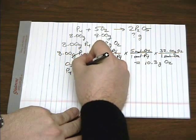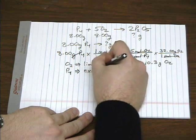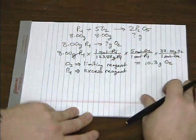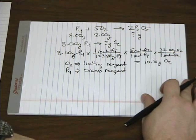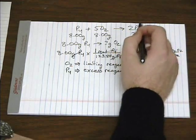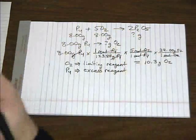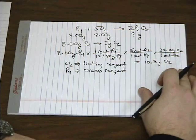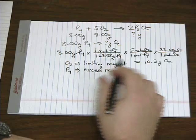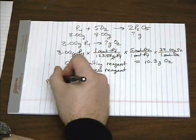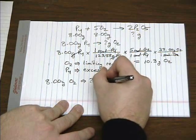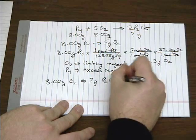So since not all 8 grams of phosphorus is going to react, we're going to have some amount left over, which we call the excess reagent. So now we can figure out how many grams of product are going to be formed in this reaction. And the thing to remember is you always use your limiting reagent. So we'll start with our 8 grams of oxygen and convert that to grams of P2O5.